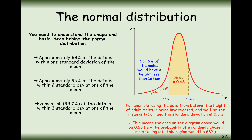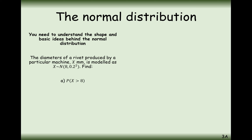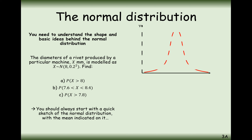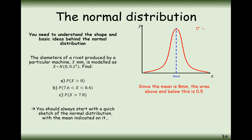Let's look at an example question. The diameter of a rivet produced by a machine, x millimetres, is modelled as X ~ N(8, 0.2²). Find the probability that the machine produces a rivet more than 8 millimetres in diameter. I would draw out the normal distribution, label 8 millimetres at the centre, and note the standard deviation is 0.2. Since 8 is the mean, the area to the right is exactly half the graph.